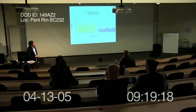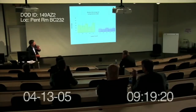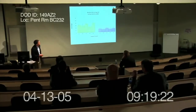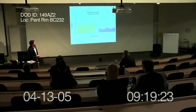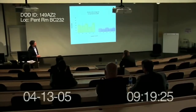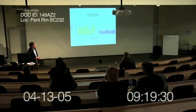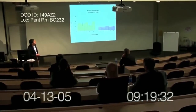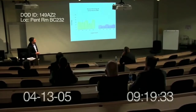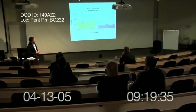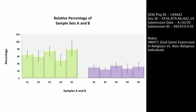Over here we have individuals who are not particularly fundamentalists, not particularly religious. And you can see there's a much reduced expression of this particular gene, the VMAT2 gene — another evidence that supports our hypothesis for the development of this approach.